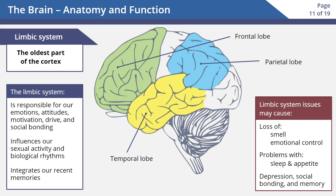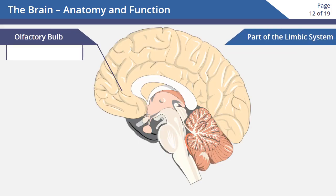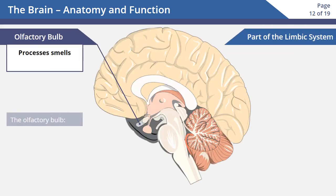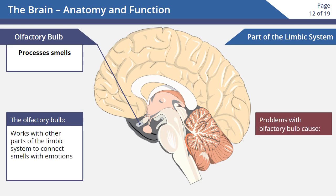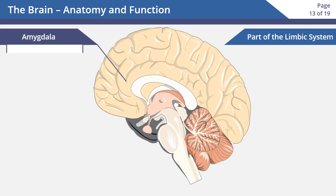Now let's look at each part of the limbic system in more detail. The olfactory bulb processes smells. It works with other parts of the limbic system to connect smells with emotions. Someone with problems in this area would experience a loss of the sense of smell.